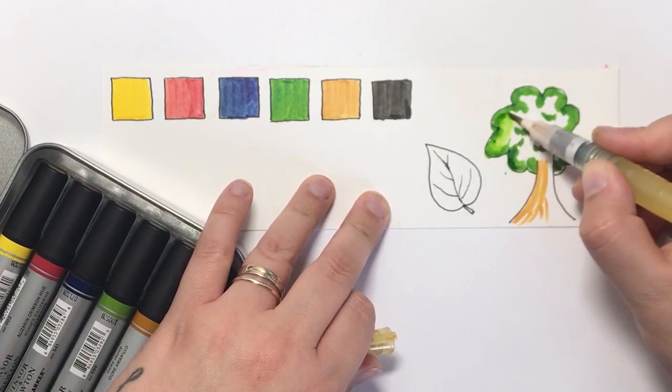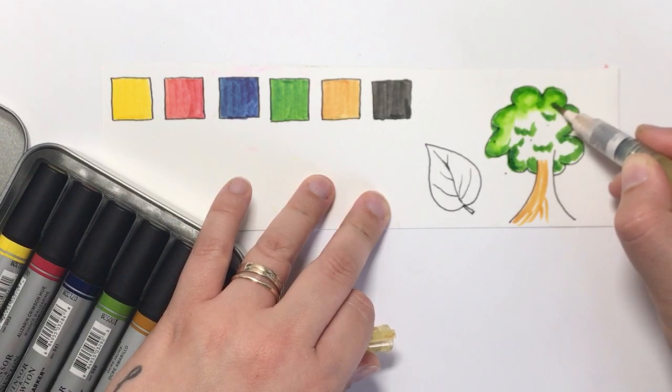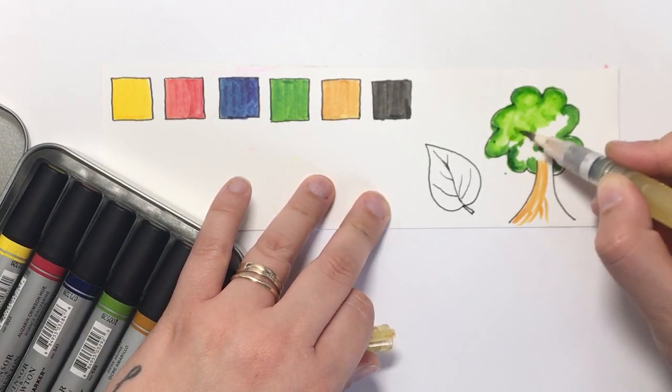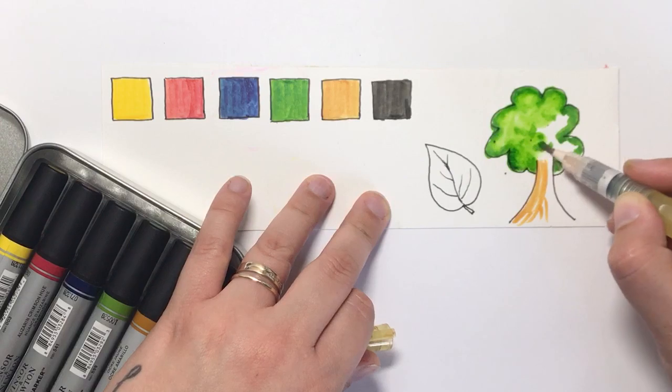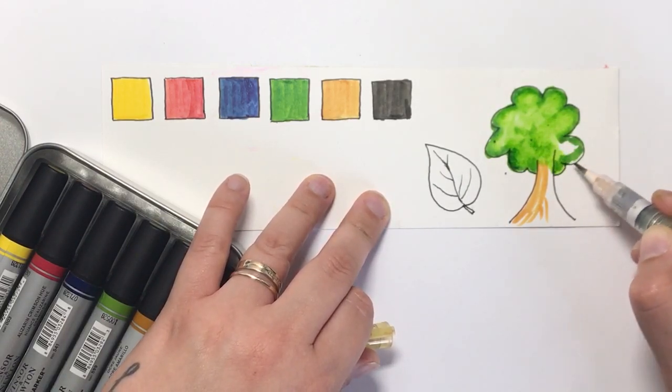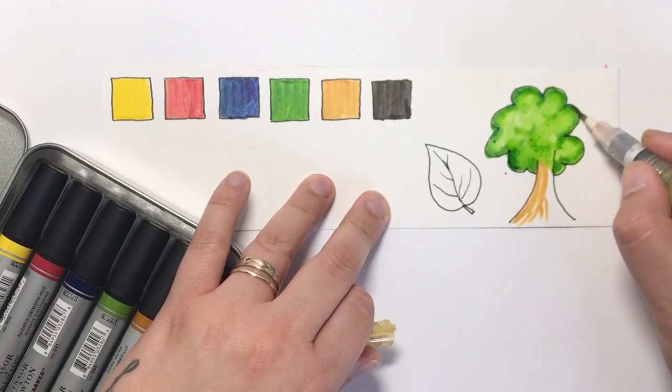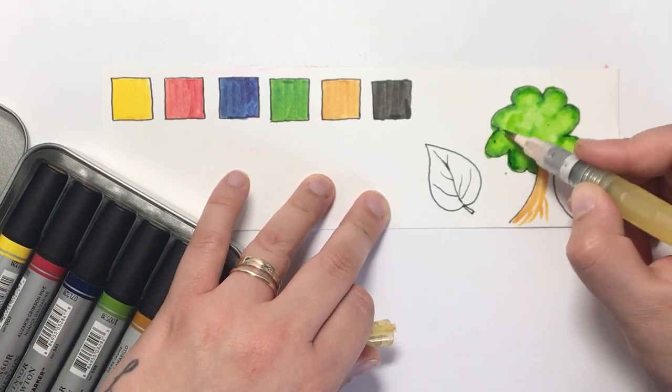I'm using a water brush. You can use a paintbrush and water, it really doesn't matter. But as you can see, the ink is just melting away and it's creating this beautiful washy watercolour look, which is really effective and adds depth and dimension and interest to the image rather than just colouring it solid.